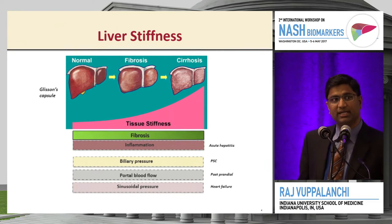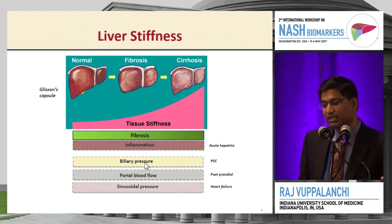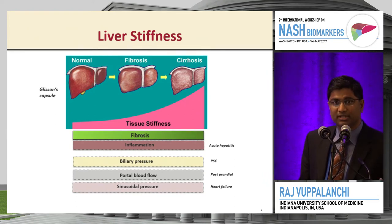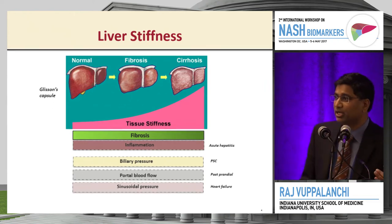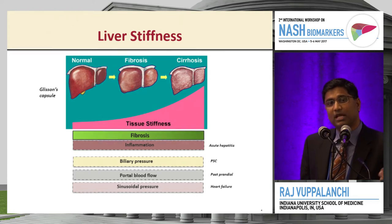There are many other things that can increase liver stiffness, as shown in various studies: inflammation as in acute hepatitis, biliary pressure as in PSC, choledocholithiasis can increase liver stiffness, and portal blood flow can also increase liver stiffness. We started with two-hour fasting prior to performing transient elastography, and now it's three hours with NASH-CRN.